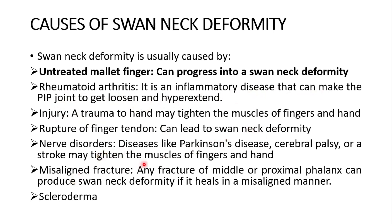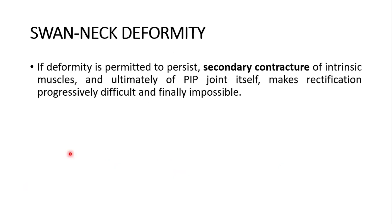Another cause is a misaligned fracture — any fracture of the middle or proximal phalanx can produce swan neck deformity if it heals in a misaligned manner. And the last cause is scleroderma. If the deformity is permitted to persist, secondary contraction of the intrinsic muscle and ultimately the proximal interphalangeal joint itself makes rectification progressively difficult, and finally impossible.